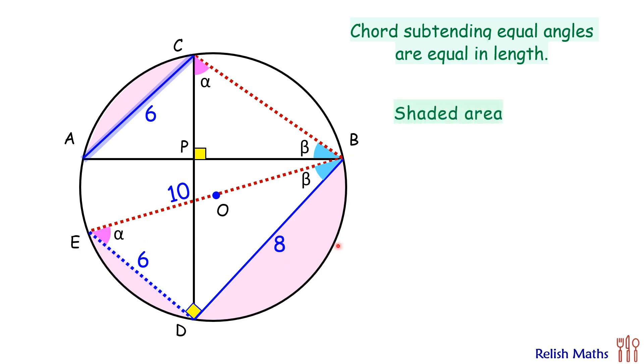That is, area of the semicircle EDB minus area of triangle EDB. Area of semicircle is half pi r squared. Area of triangle EDB is half of base into height.